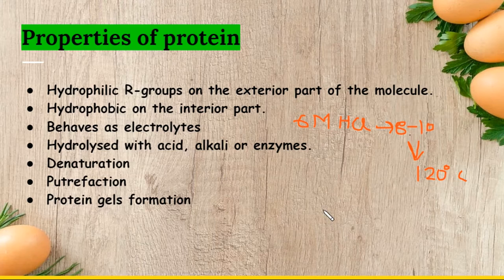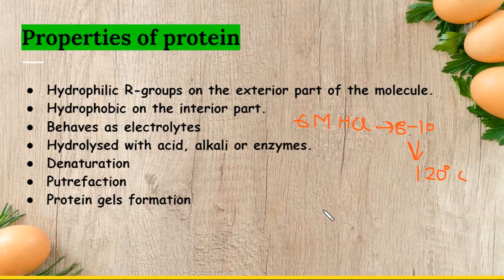Then we have denaturation. Denaturation is the loss of conformation, which brings changes in the specific properties and identity of proteins. This can happen due to high temperature, high pressure, UV radiation, or decline or increment in pH, or addition of synthetic detergents. These are the factors causing denaturation of proteins.